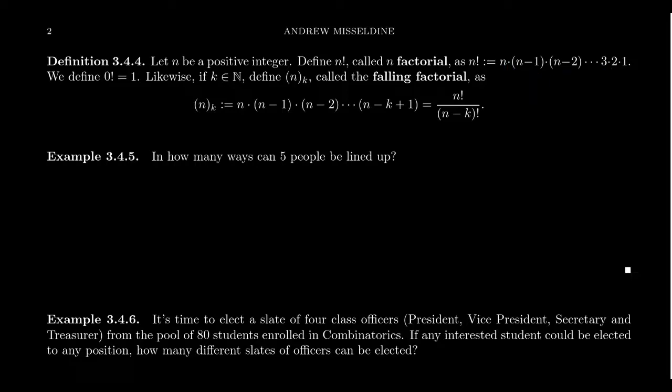We do want the n factorial function to be defined for all natural numbers. So we also define zero factorial and that's defined to equal one. We'll give you some explanation about what this is and why we define zero factorial to be one in just a second. But this is a notation you've probably seen before.